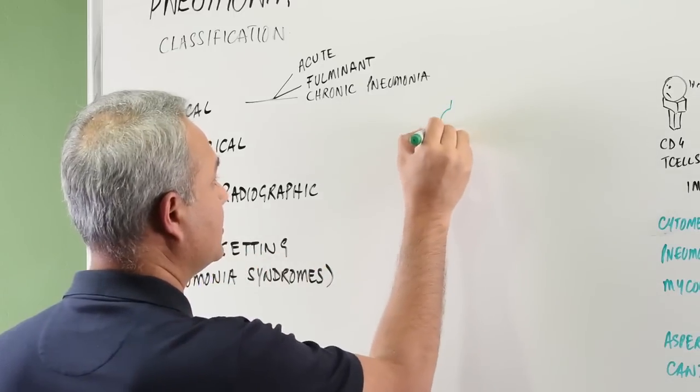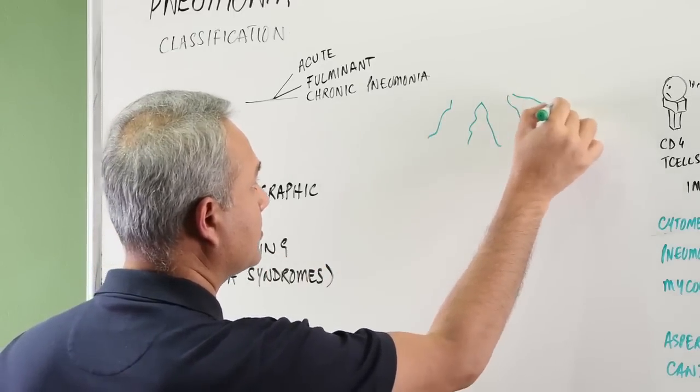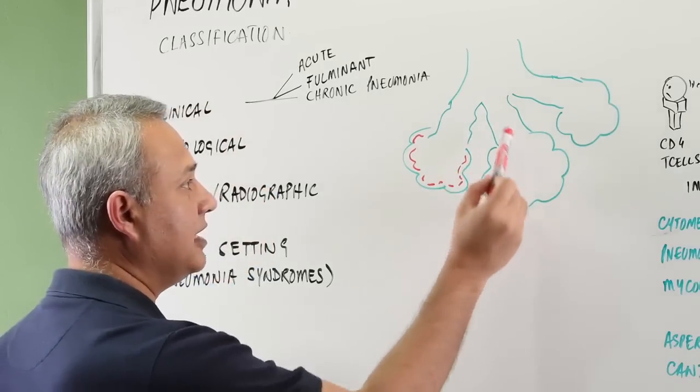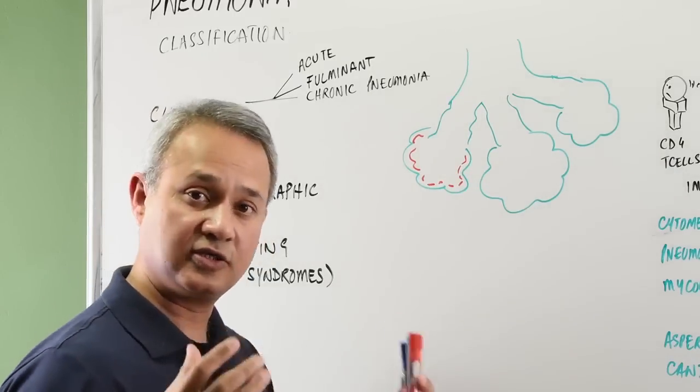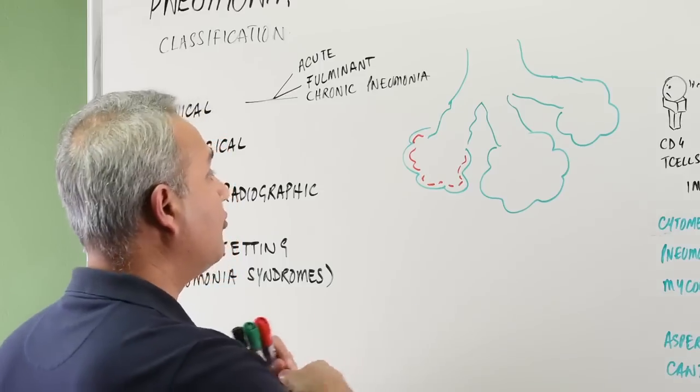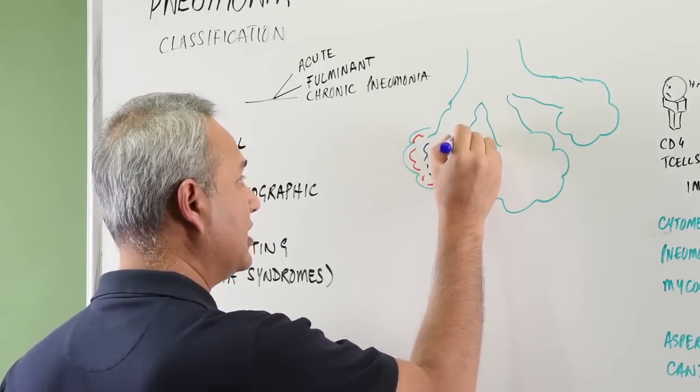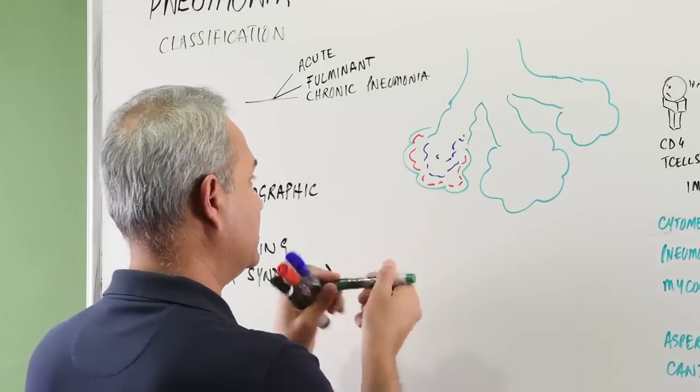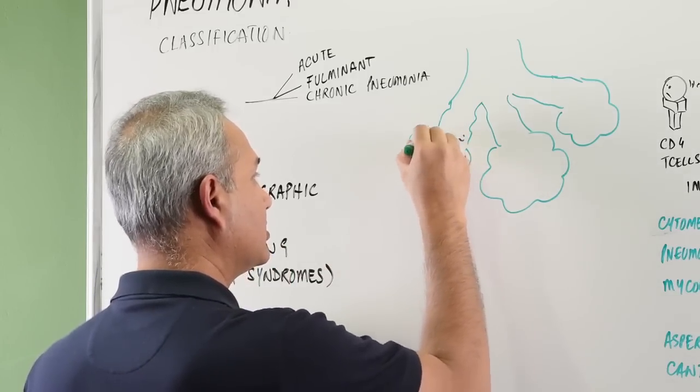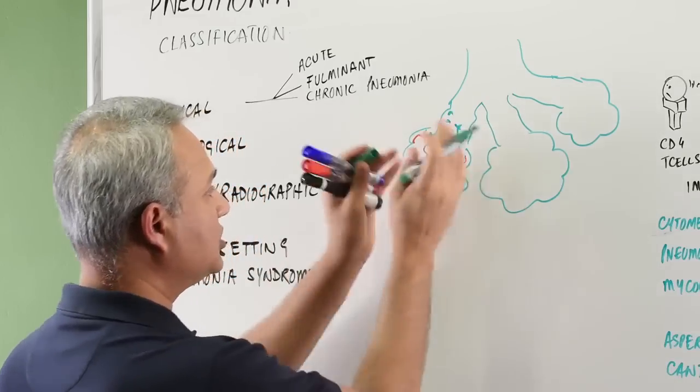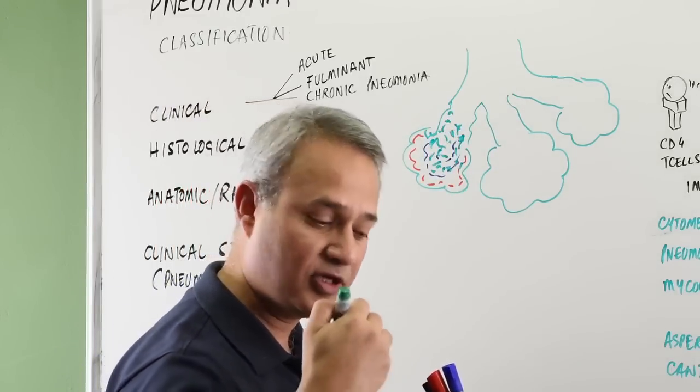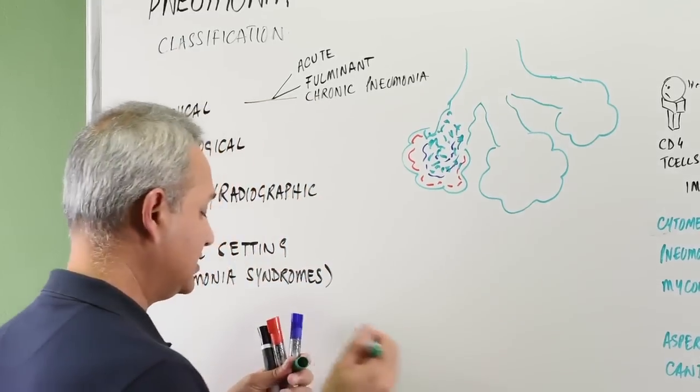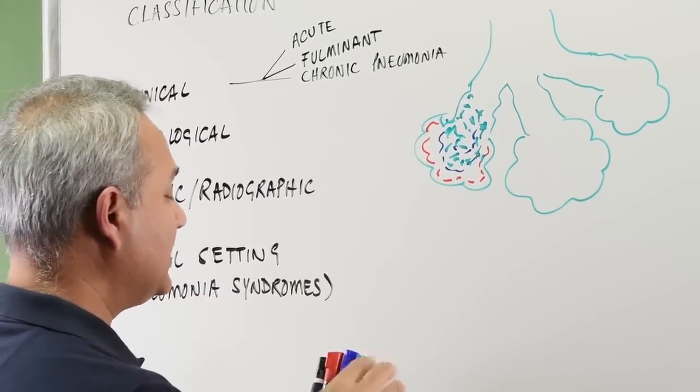Let's make a respiratory system here. Let's say these are the alveoli. One histological picture is that we have lots of fibrin, so fibrinopurulent consolidation of the lung alveoli. The alveolus is filled with pus and fibrin and other inflammatory proteins and structures and cells. That is one type.